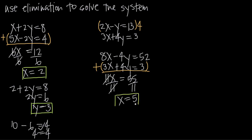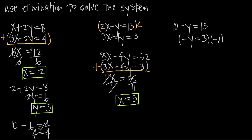With the solution x equals 5, we need to find the associated value of y. We plug x equals 5 back into our first equation: 2 times 5 is 10, so 10 minus y equals 13. Subtracting 10 from both sides gives negative y equals 3. Multiplying both sides by negative 1, the negatives cancel and we get y equals negative 3.